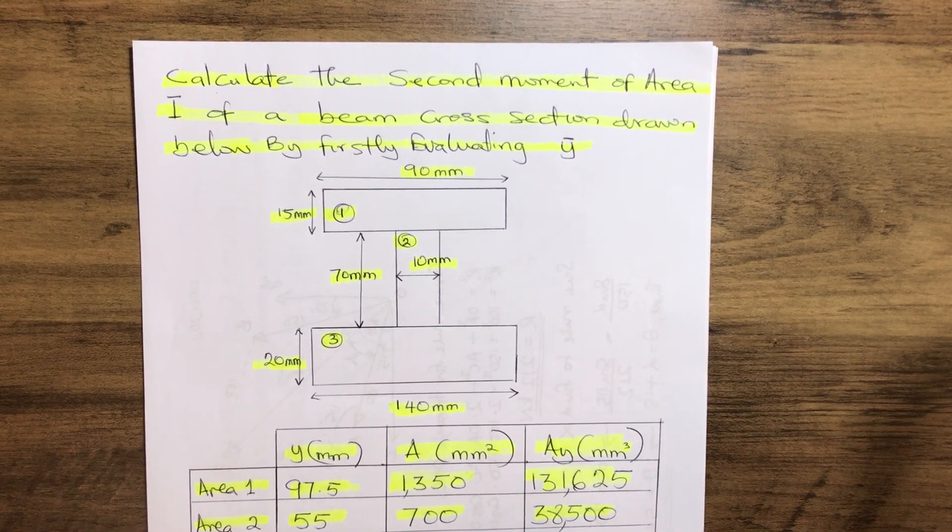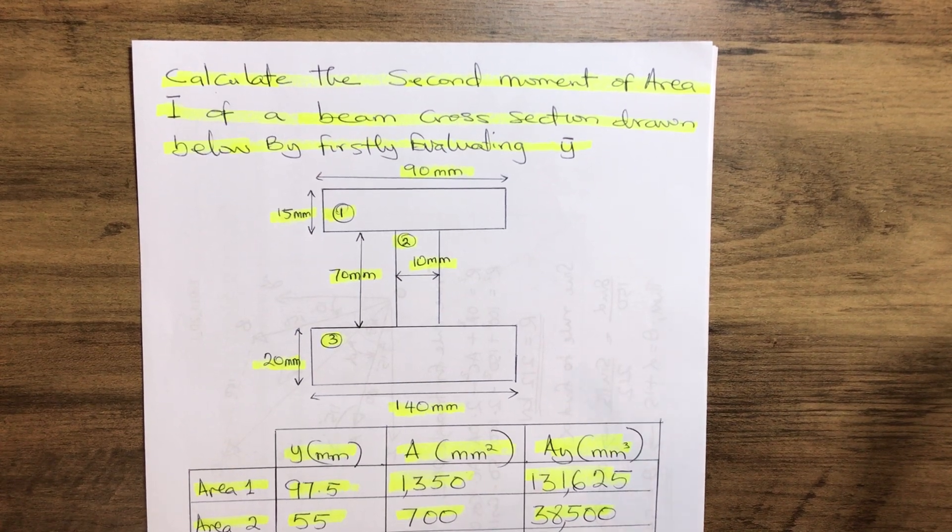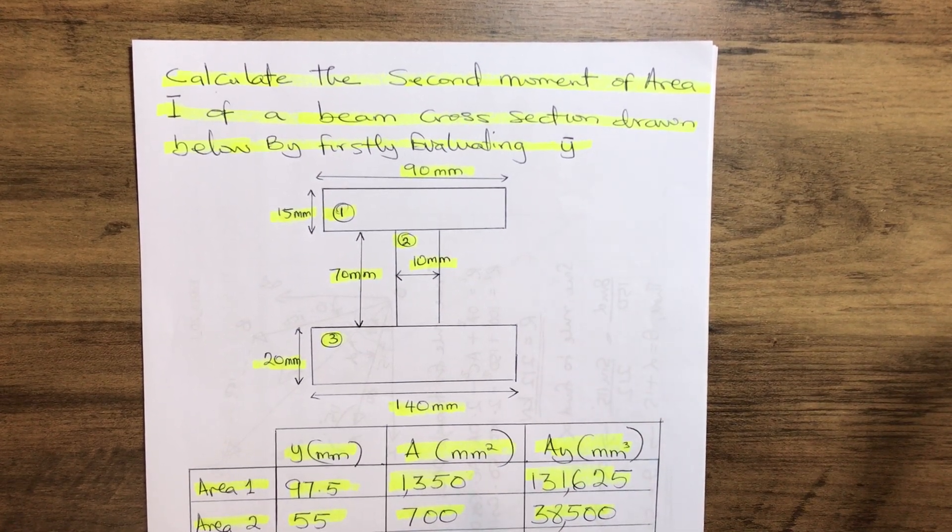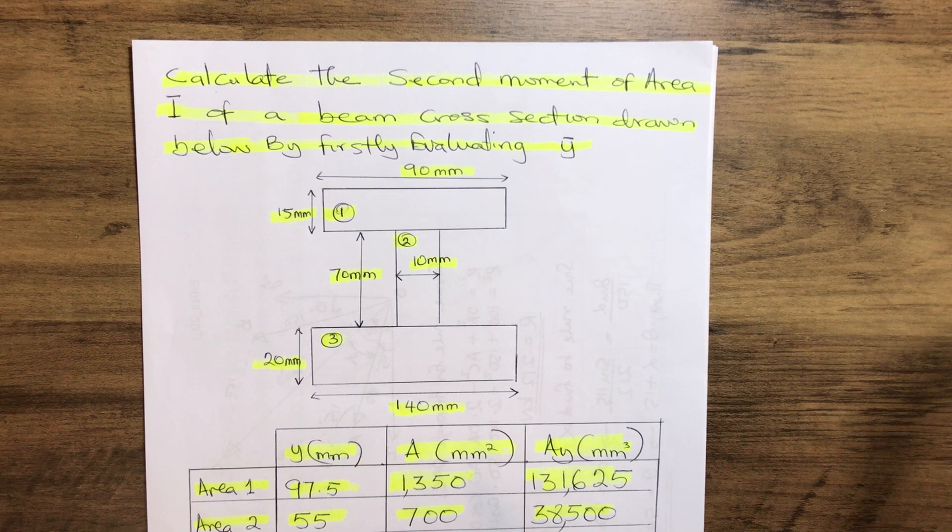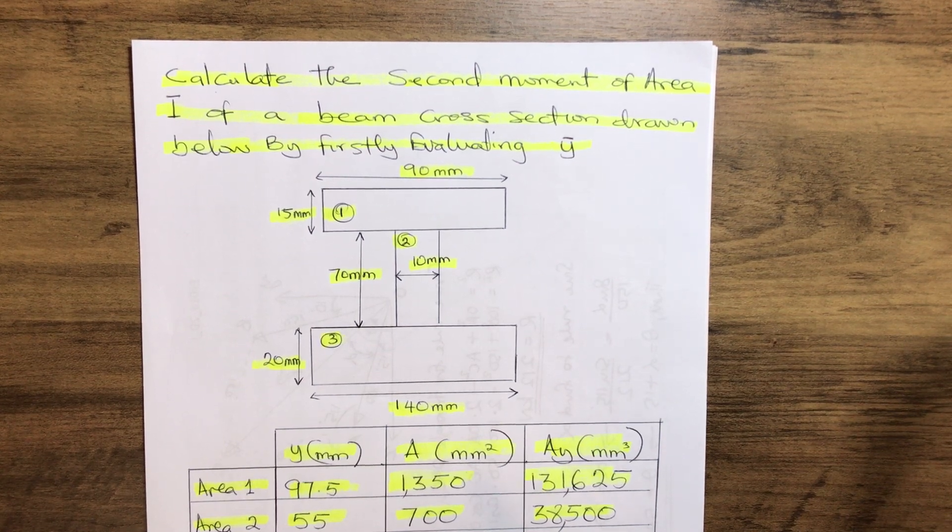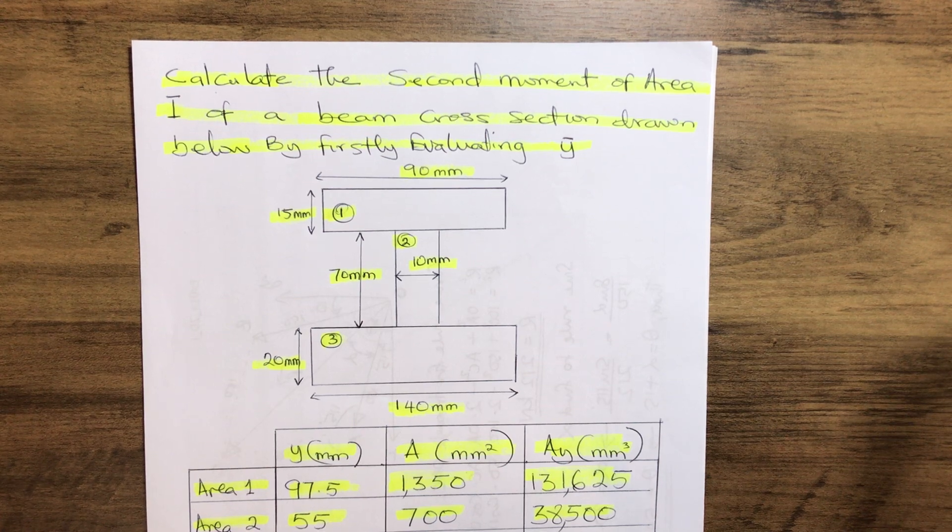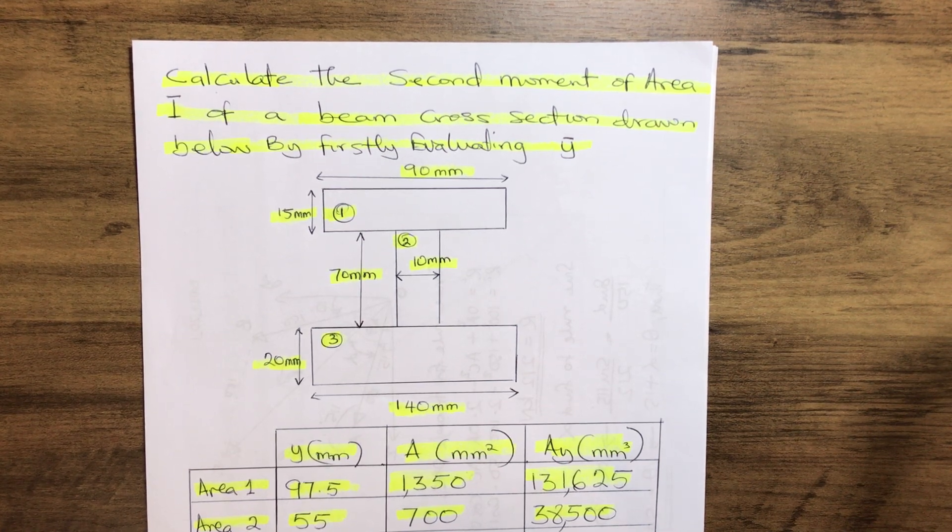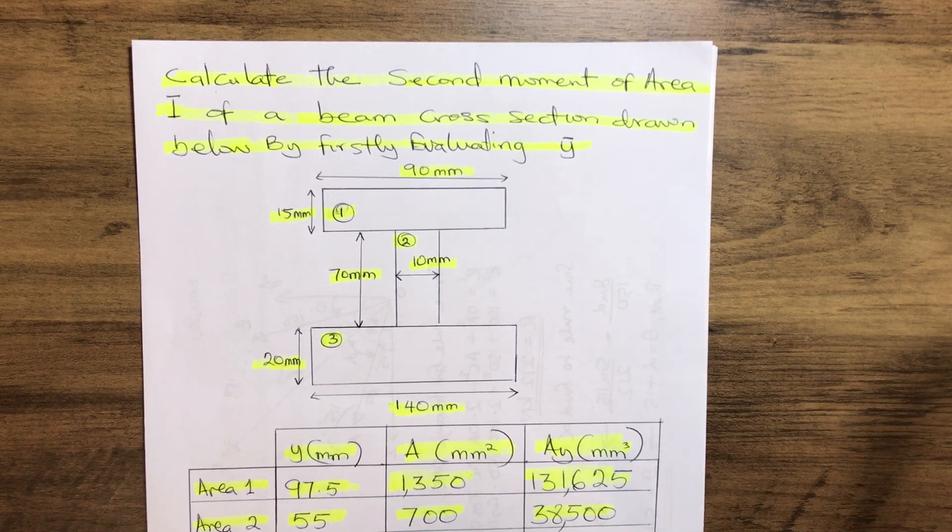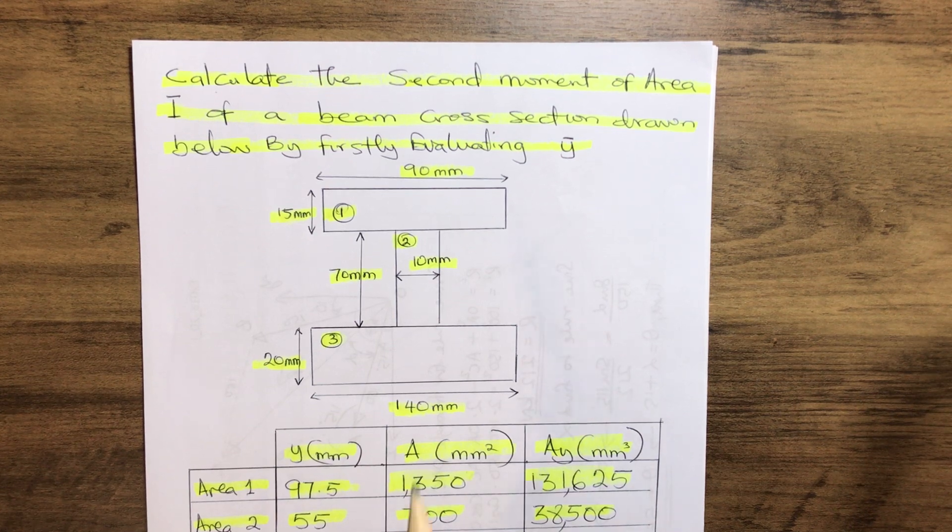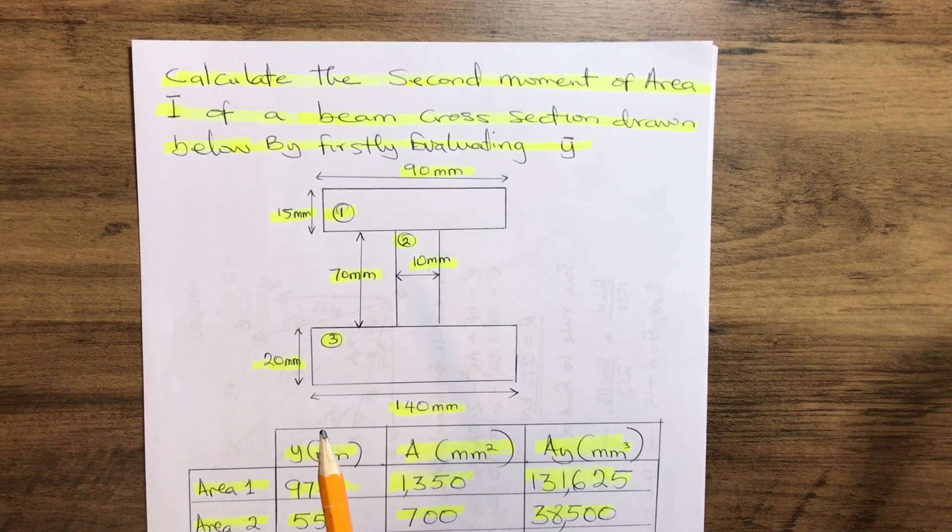Hello everyone, once again you're welcome to our channel. Today we shall be discussing how to calculate the Y-bar of a beam cross-section. Now let's reach to the following question: calculate the second moment of area I of a beam cross-section drawn below.